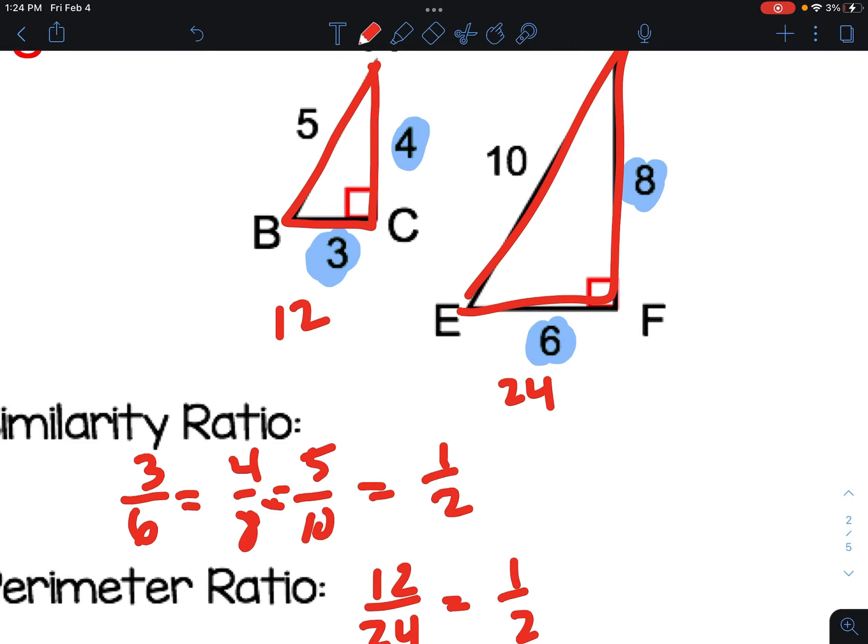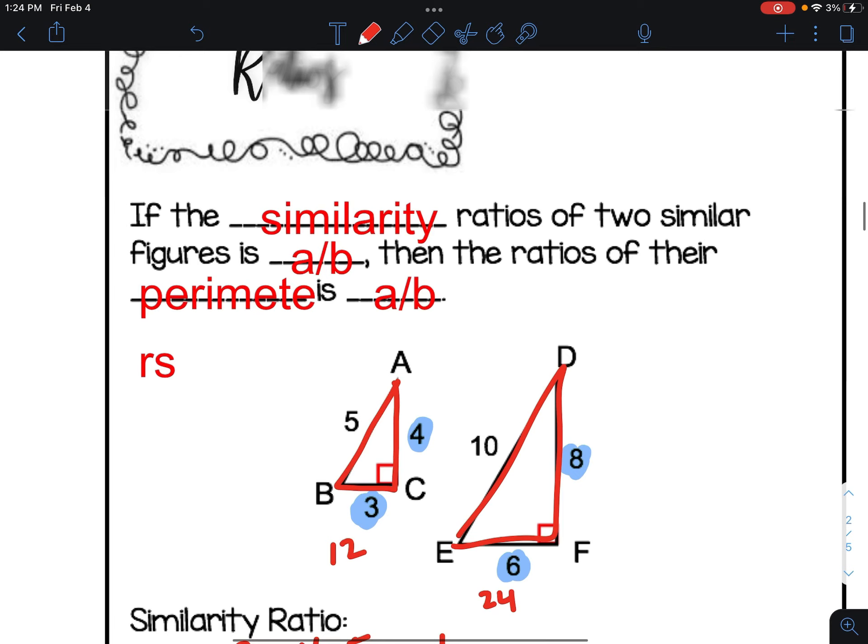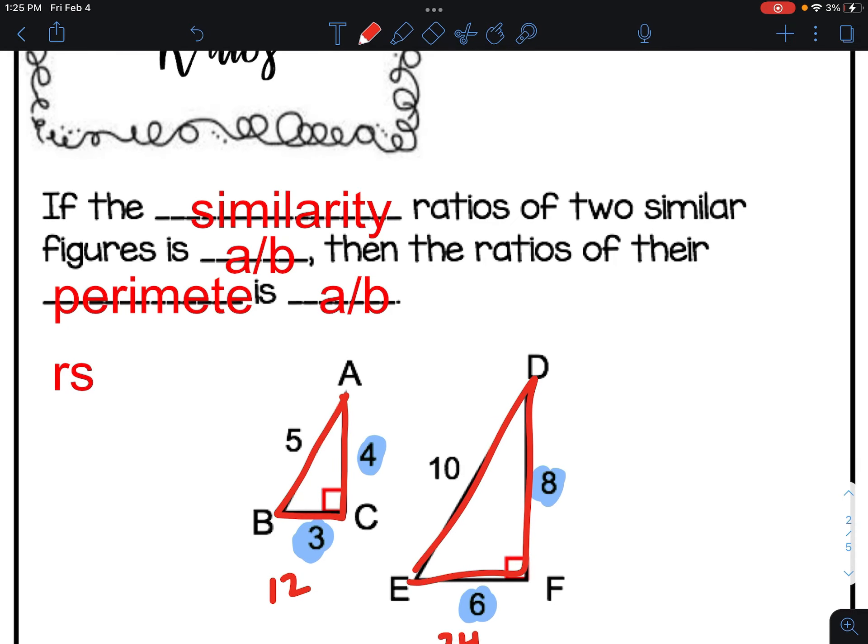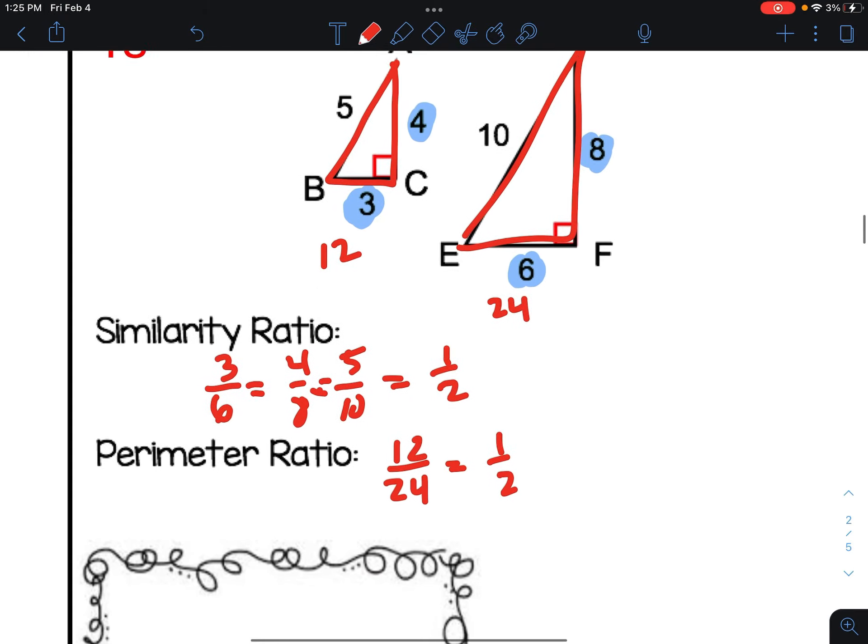So as you're reading through your notes, the similarity ratio of two similar figures, if it's A to B, then the ratio of the perimeters are A to B.